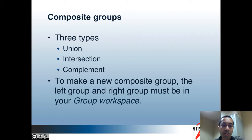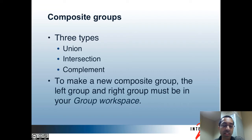You can even use composite groups to create other composite groups — for instance, if you want to create an intersection of three or more groups. Before making a composite group, you have to add the two groups that make it up, the left and right groups, into your group workspace. The group workspace is basically a temporary area where you can put groups so you can easily refer to them in the admin UI. The workspace is cleared when your session ends, so it won't be there the next time you log in.